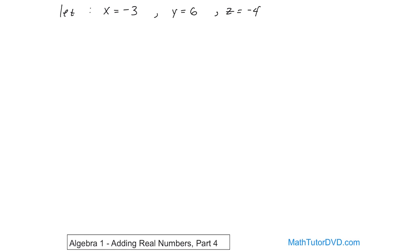For this first problem, it's going to be x plus y plus negative 1. Basically, we want to simplify this answer, so we'll plug in the values here. x equals negative 3, so it'll be negative 3 plus y, which is positive 6, and then we have plus negative 1.